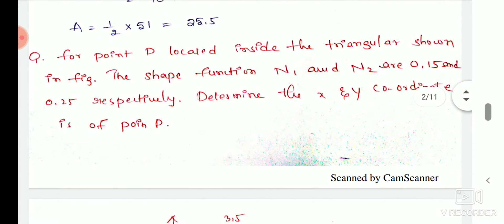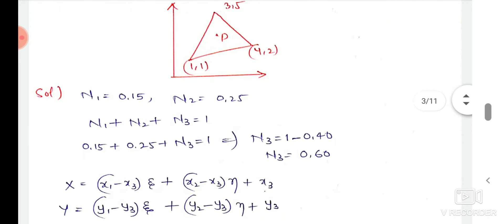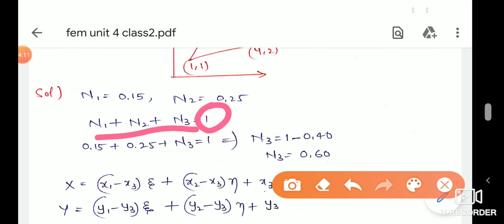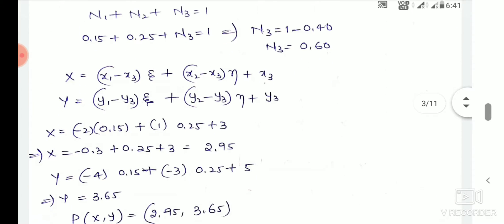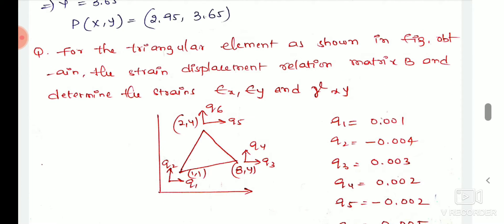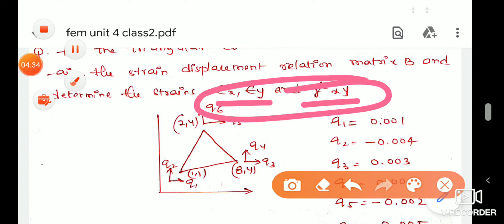The next model problem: we will choose n1 into shape functions. We will determine n1 into shape functions. We will find out this in a triangle. So for the triangular element, we have to find the normal strength and shear strength, so we have to find the value of this problem.